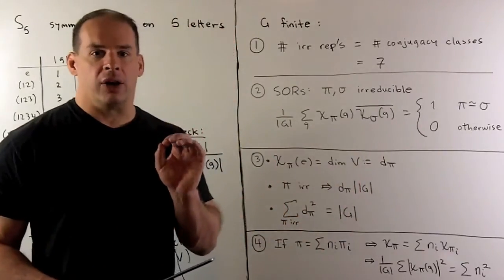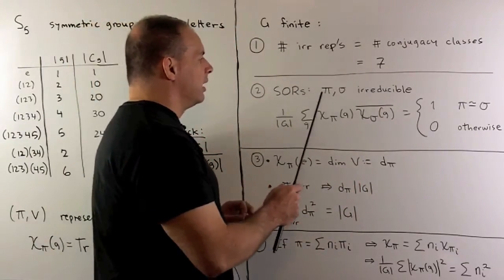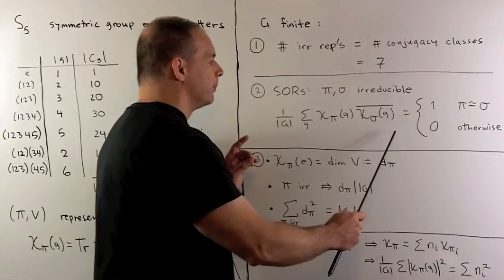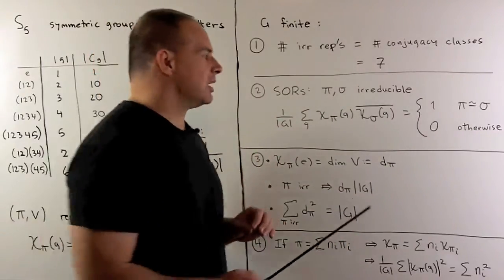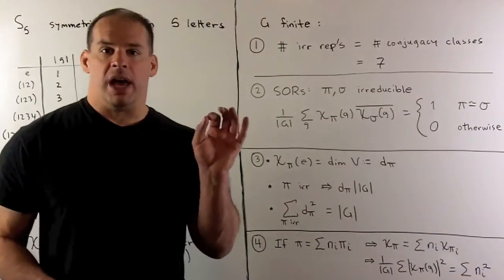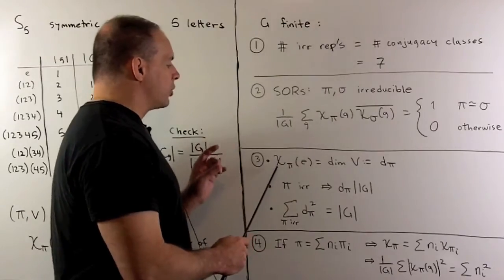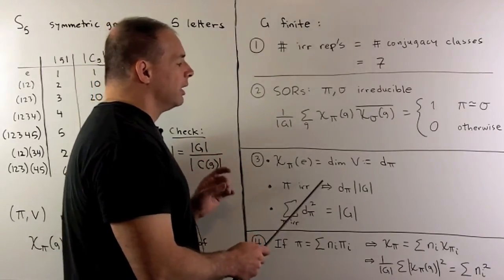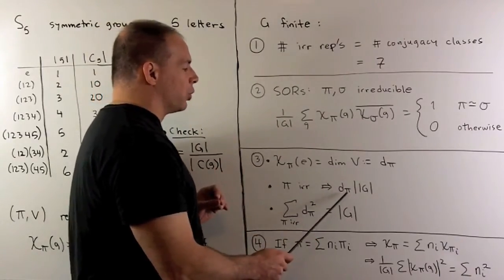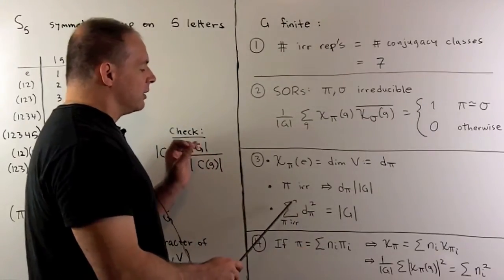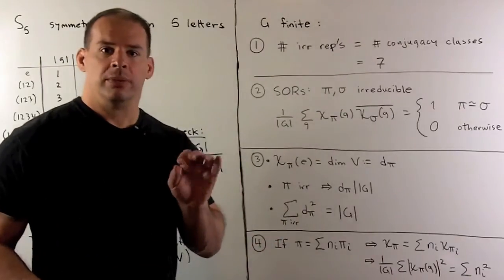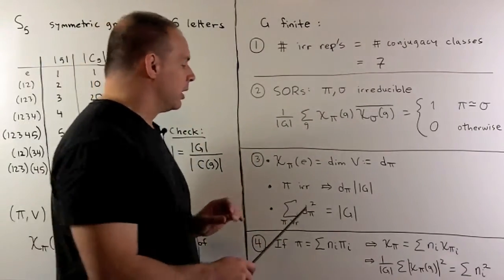Then we have the short orthogonality relations. If we take representations pi and sigma, both irreducible, we consider this sum: we get a 1 if pi and sigma are equivalent, and a 0 otherwise. Considering dimensions: if we take the character of any representation and evaluate the identity element, we get the dimension of our vector space. If pi is irreducible, then the dimension divides the order of the group. And if we take the sum over each inequivalent irreducible representation and sum the squares of the dimensions, we get the order of the group.